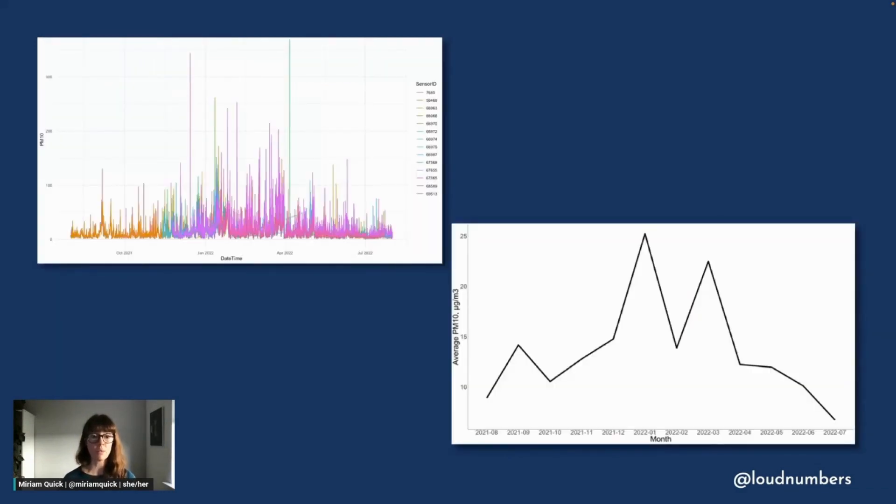I downloaded a year's worth of data from the first of August 2021 to 31st of July 2022. In total, I took data from 14 different sensors, and this map on the right shows where they were located within Ashley Ward. And this is what that year of air quality data looked like. So the chart on the left shows the raw readings for large particulates, or PM10, and each sensor has a different color on the chart.